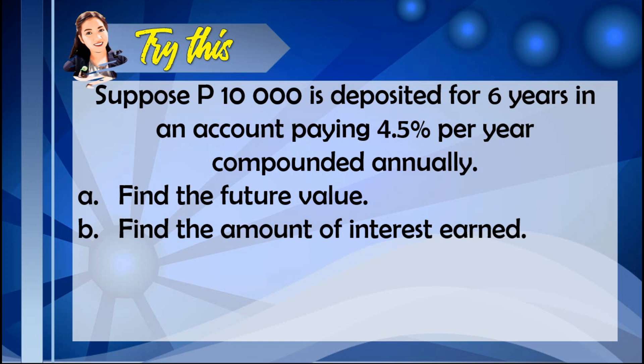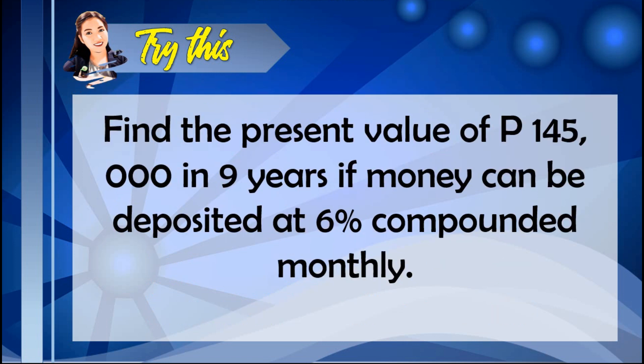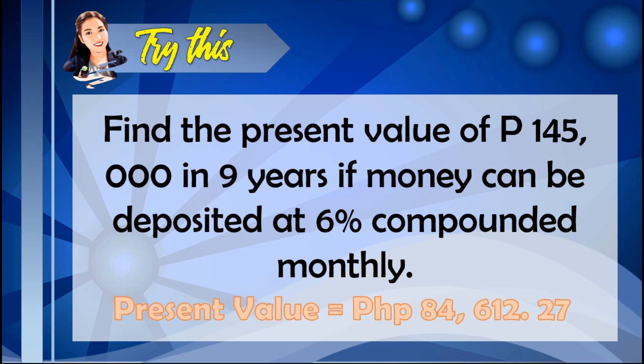After showing how to compute the present and future value in compound interest, try the following examples — you may pause the video to answer. Let's check your work: the future value is 13,022.60, and the amount of interest is 3,022.60. For the next example, the present value is 84,612.27.